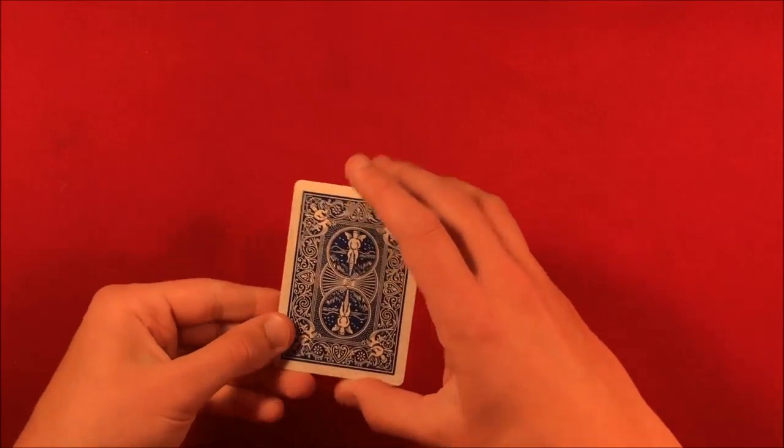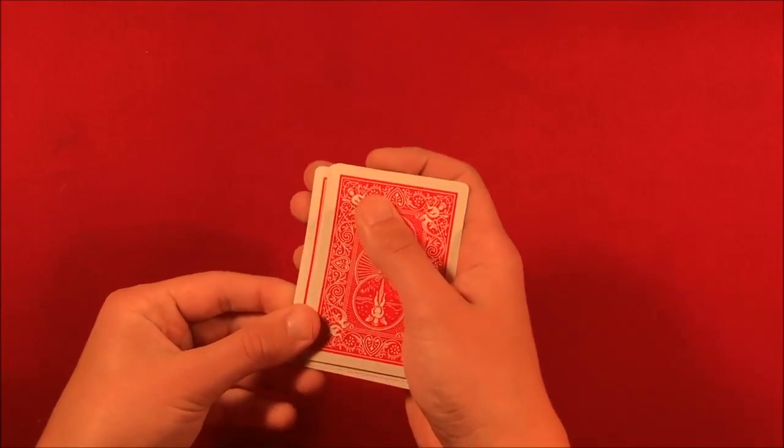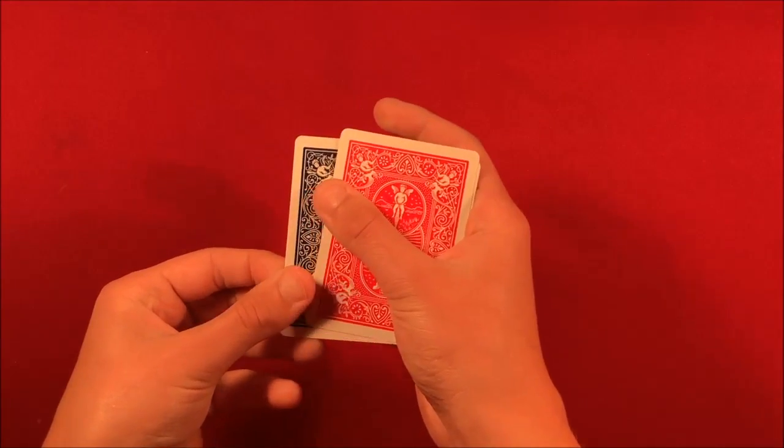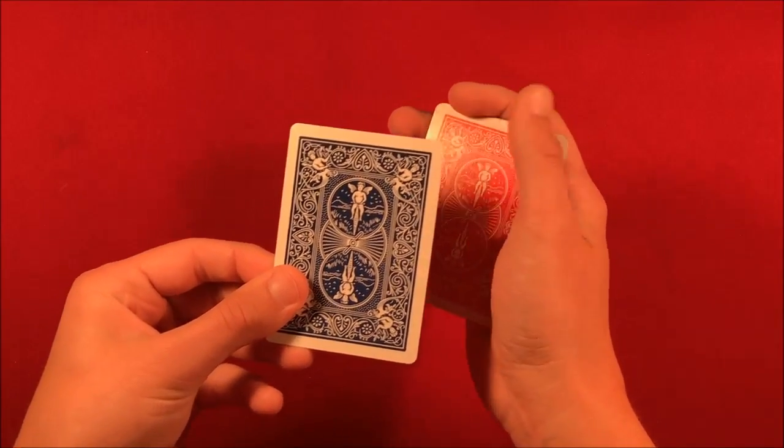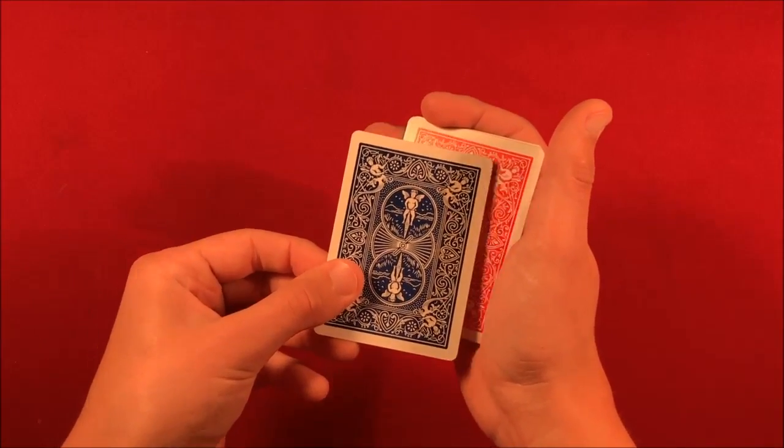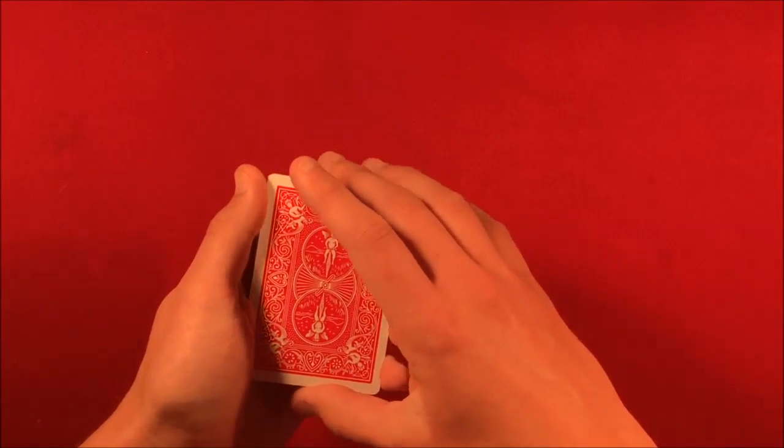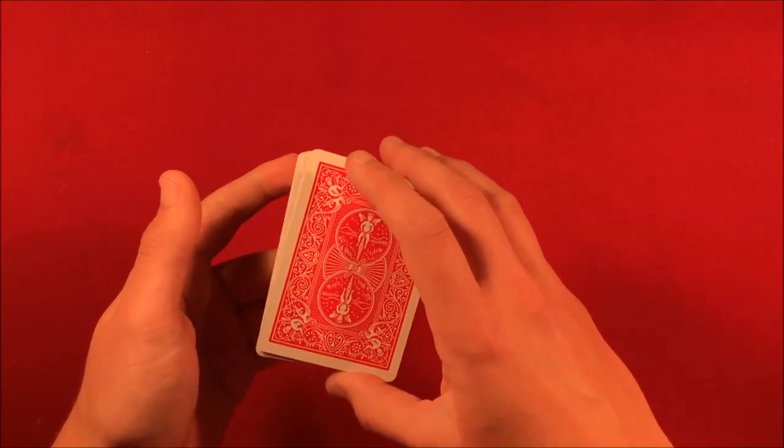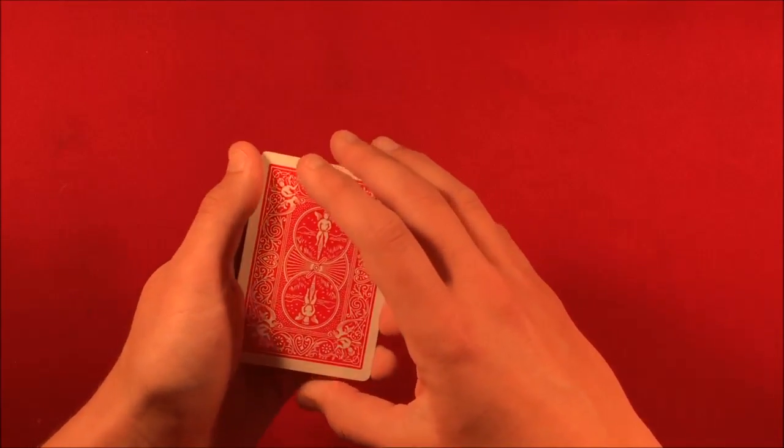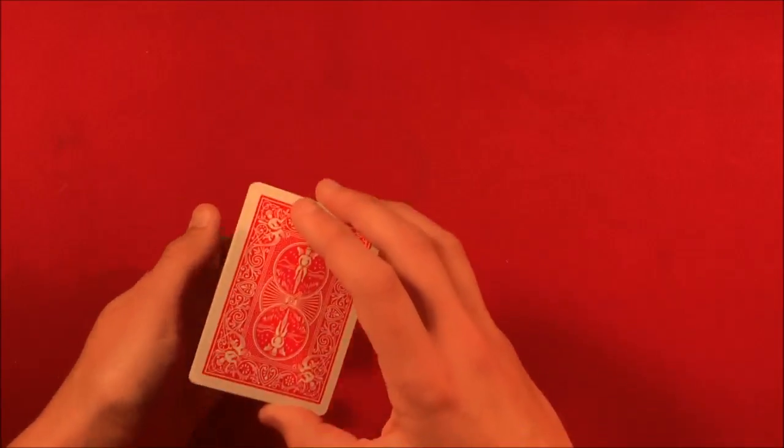are just regular Elmsley counts. So you're just doing regular Elmsley counts, except for at this point, instead of putting the card back on top, you're putting that blue card on the bottom. So you do two regular Elmsley counts, except for the second one, you put the last card on the bottom. And then you give it another shake.